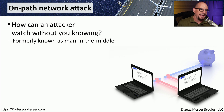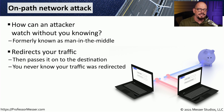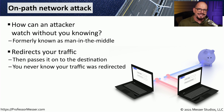We refer to this type of attack as an on-path network attack, also known as man in the middle. The device or attacker in the middle of the conversation receives information from one device, examines it, in some cases even changes it, and then sends it on its way. The source and destination devices have no idea this device is in the middle, or that the information was changed.